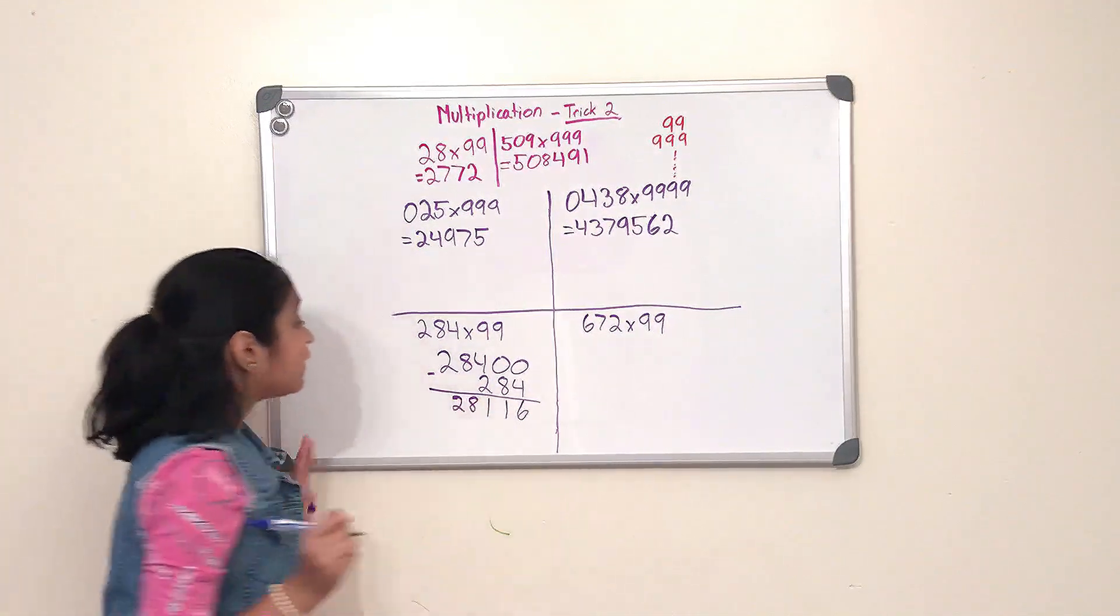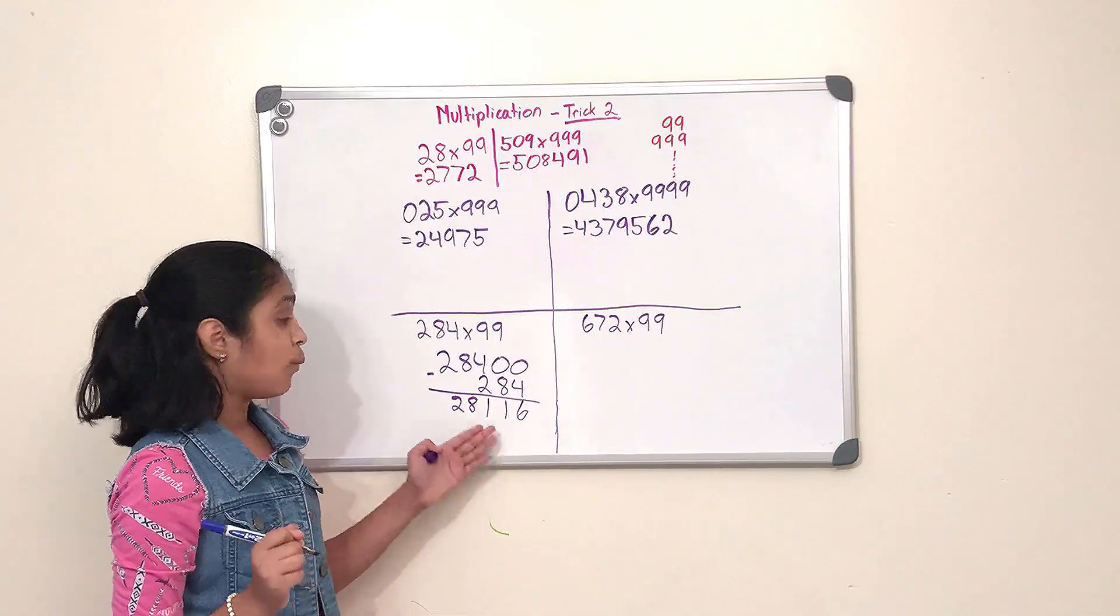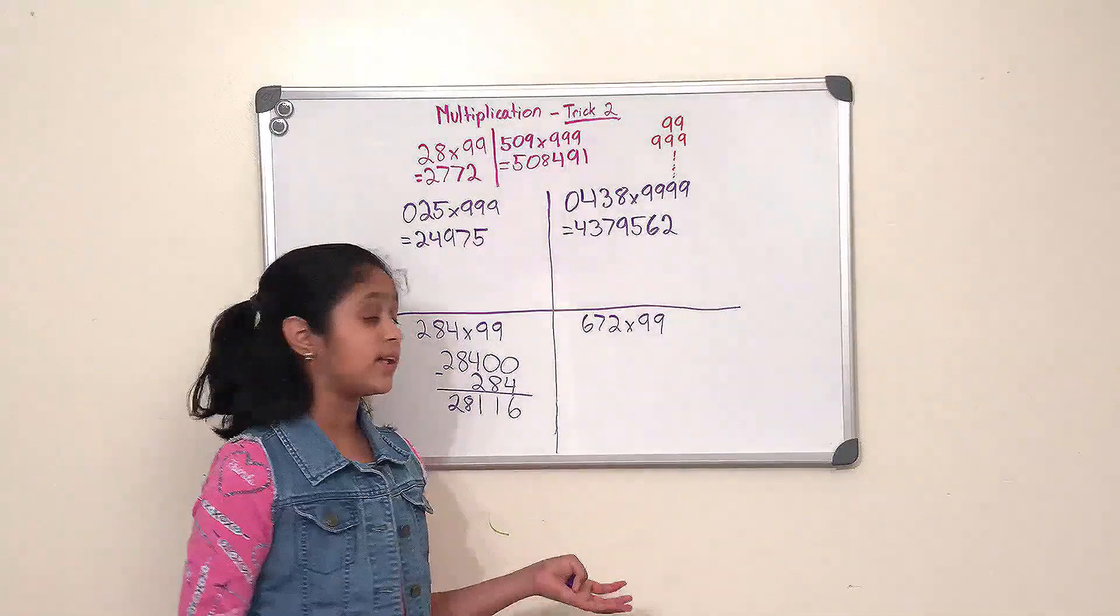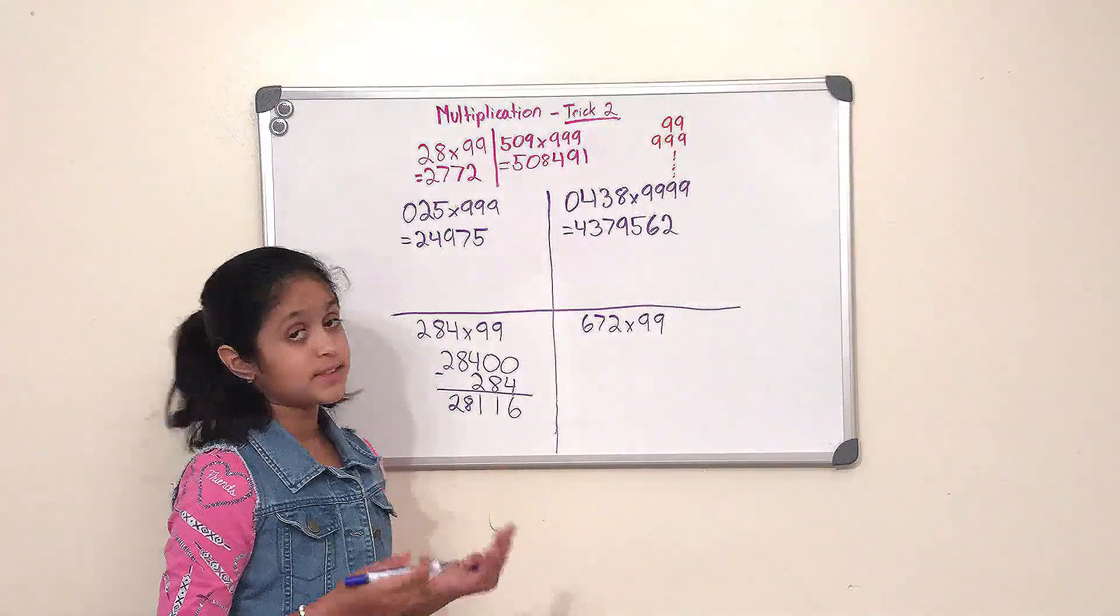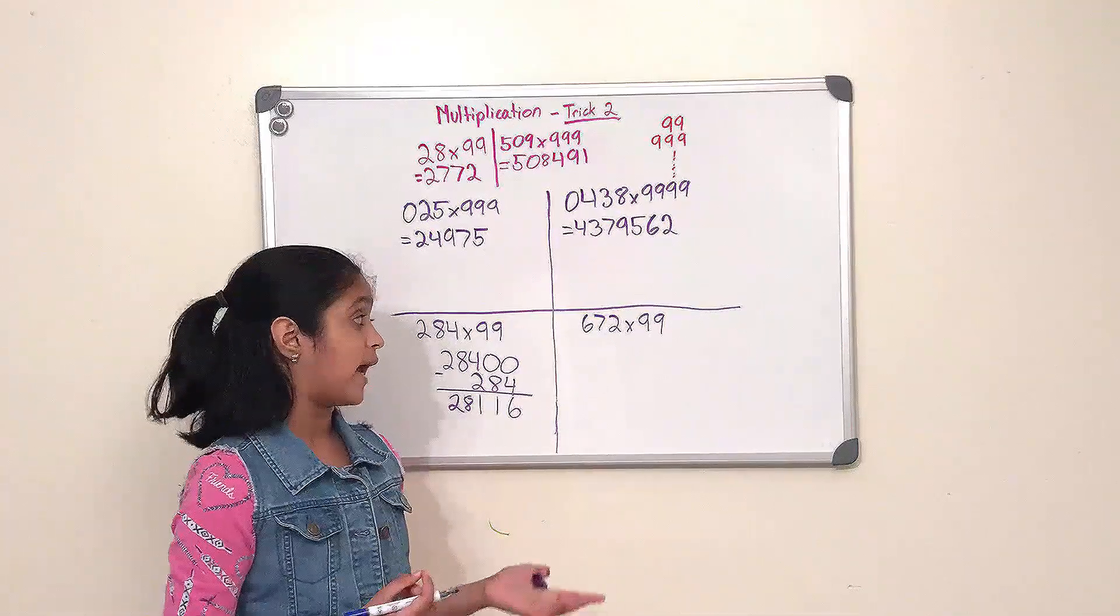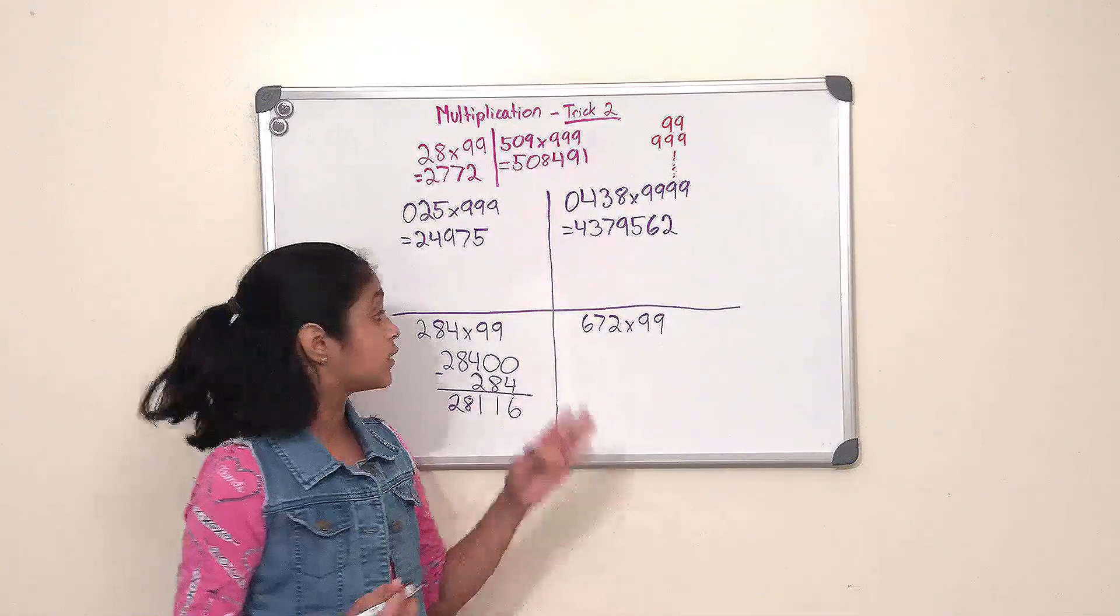So our last problem in today's video is to do 672 times 99. So our first step is we have to identify which base is closer to the number of 9, and this problem it is the same as this one, which is 100.